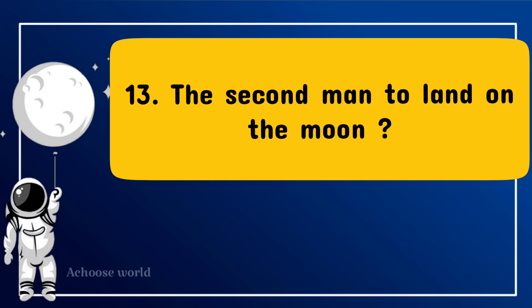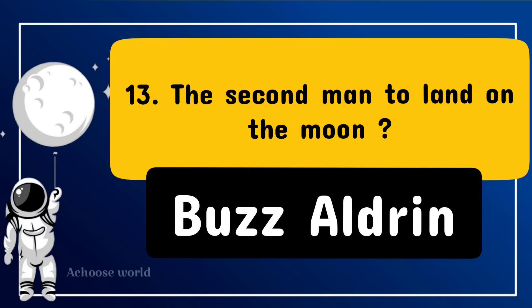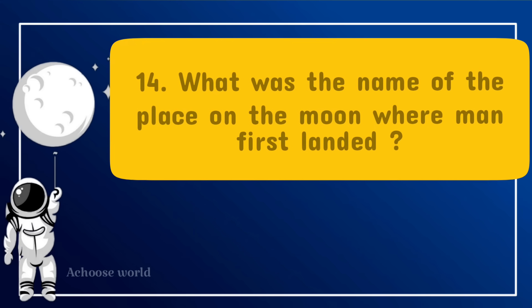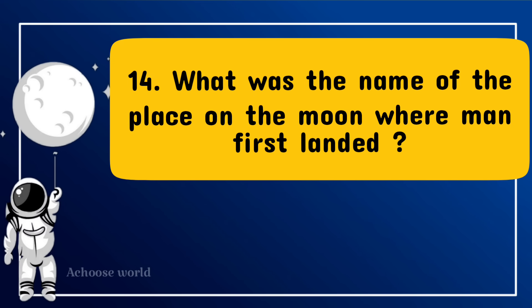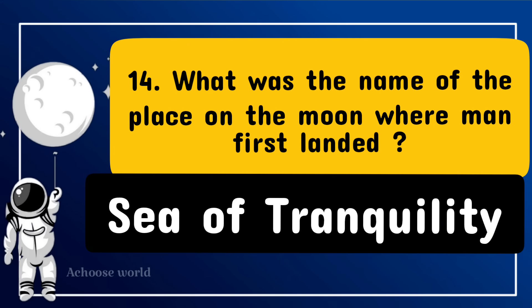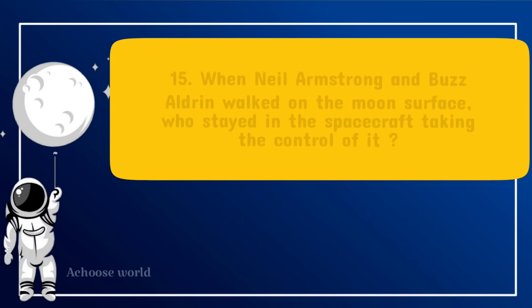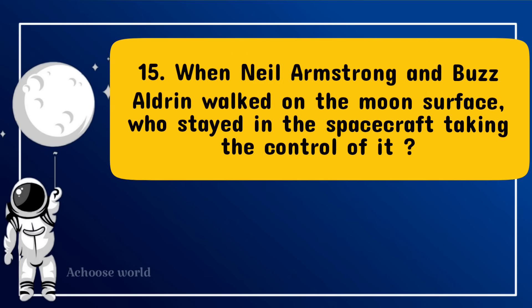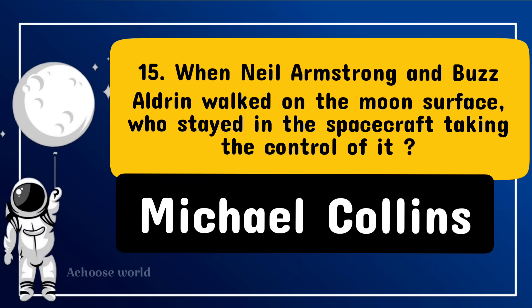The second man to land on the Moon was Buzz Aldrin. What was the name of the place on the Moon where man first landed? Sea of Tranquility. When Neil Armstrong and Buzz Aldrin walked on the Moon's surface, who stayed in the spacecraft taking control of it? Michael Collins.